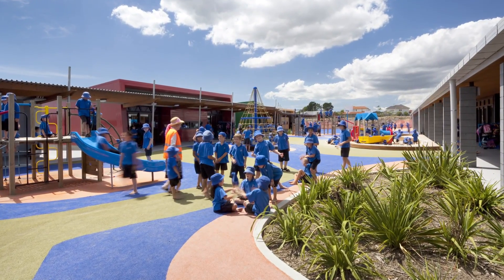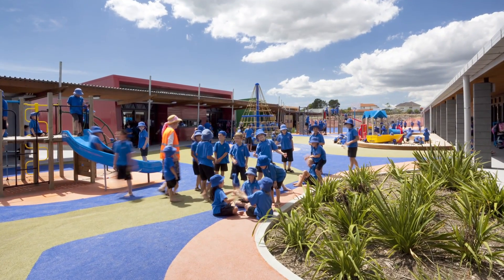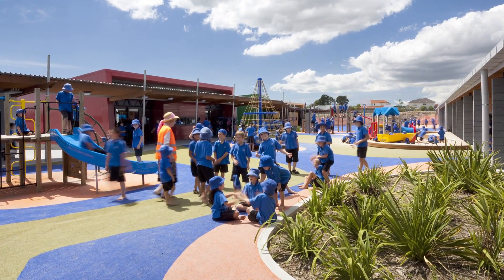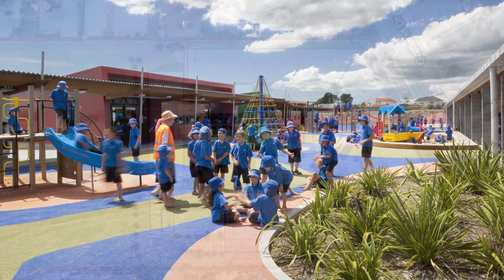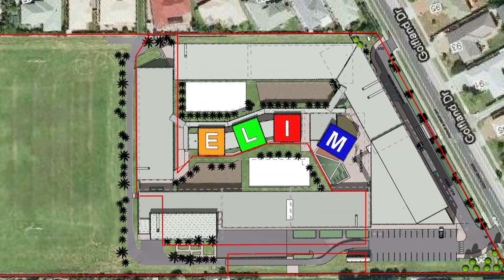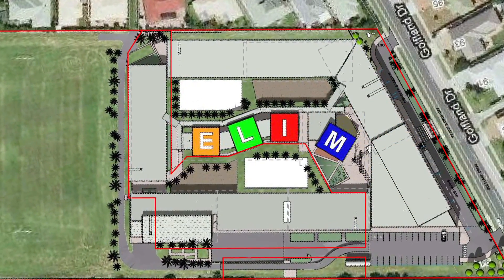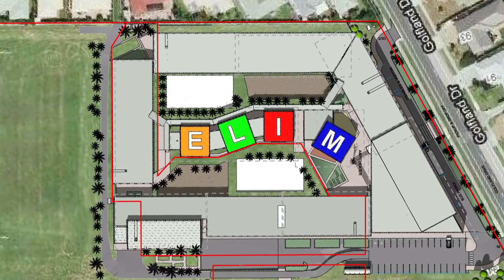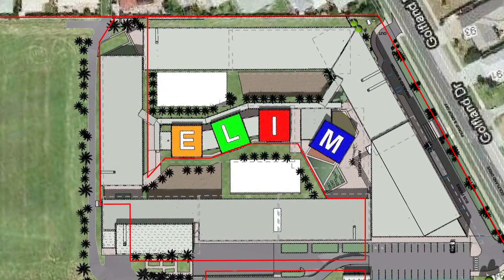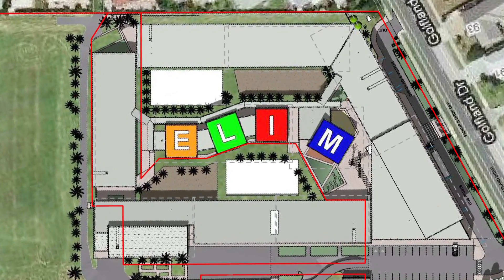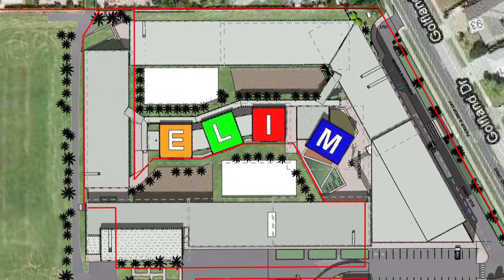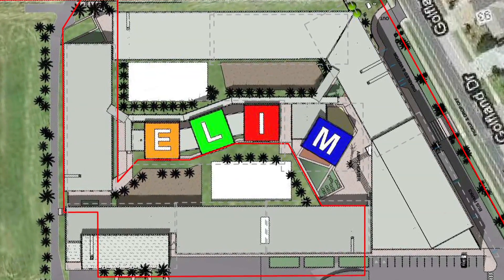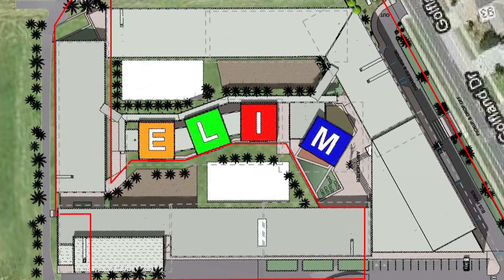And so we took that notion, and then we had a block of exactly the same classrooms running east-west through the middle of the building. As we looked at it, we said, really it's about a ring of buildings with some in the middle. So let's make those buildings in the middle not the same as the ones around the outside, but let's make them playful and of the oasis. And so they developed into those coloured cubes of the four different colours, and we wrote Elim on the roof.